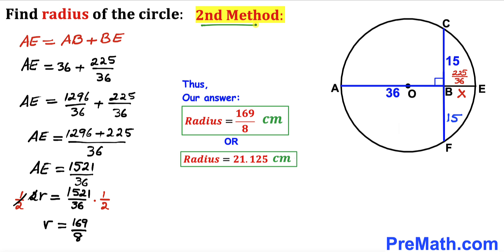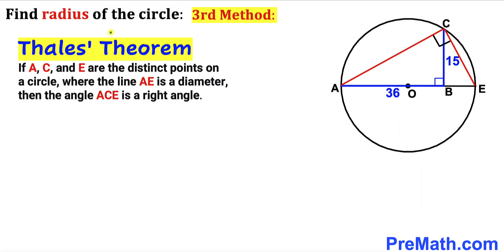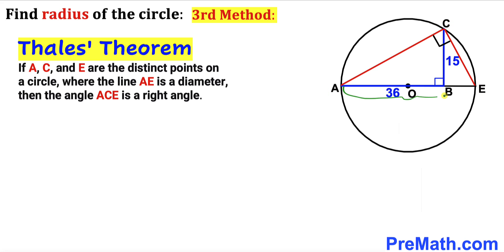Now for the third method. I have connected point C with points A and E. Recalling Thales' theorem: if A, C, and E are distinct points on a circle and AE is the diameter, then angle ACE is a right angle. Here AE is the diameter, so angle ACE equals 90 degrees.